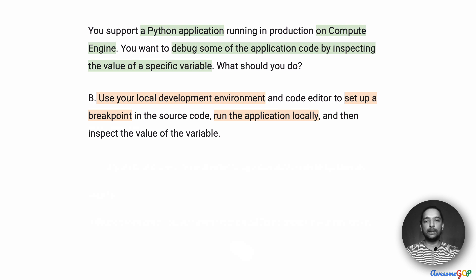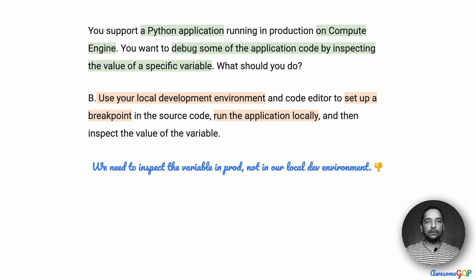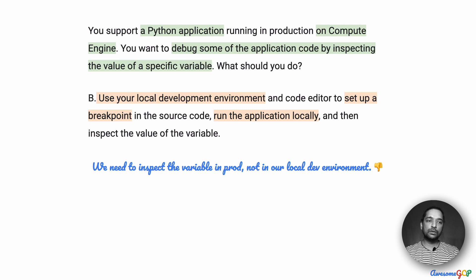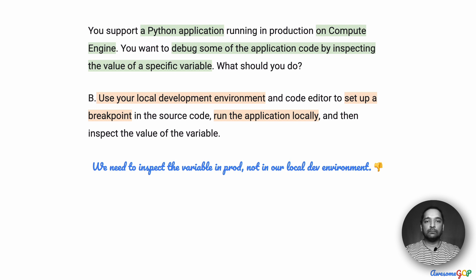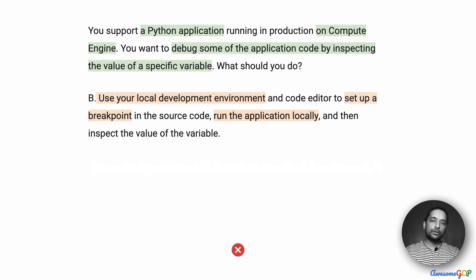Option B suggests: use a local development environment and code editor to set up a breakpoint in the source code, then run the application locally and inspect the value of the variable. This is definitely not what we want — we are not trying to replicate the application in a local development environment. We want to see the value of the variable at runtime in production. Using a local dev environment defeats the purpose, so option B is out.